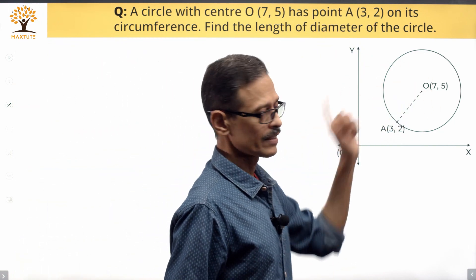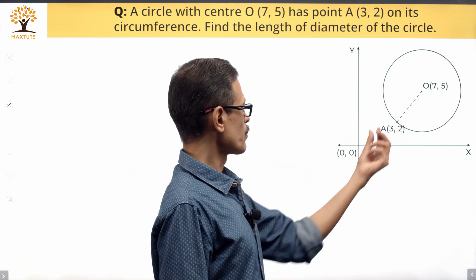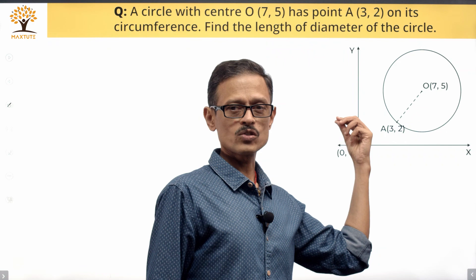So in the diagram, the center of the circle O is at (7,5). The point A which is on the circumference has coordinates (3,2).